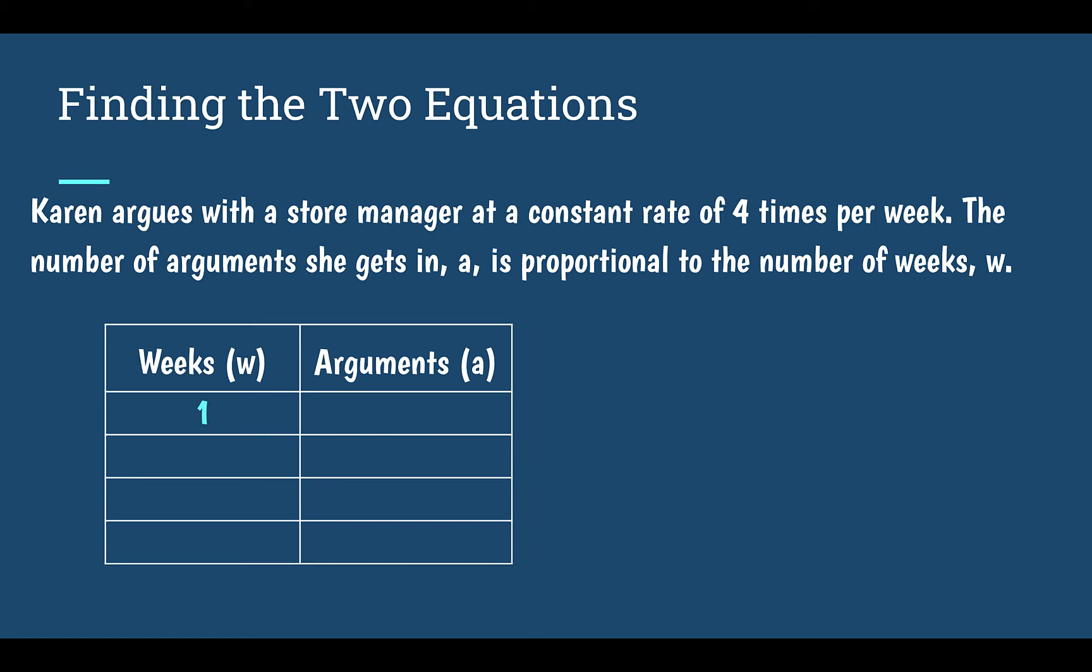We know that she gets in four arguments per week. So if one week passes, that would mean she's been in four arguments. Based on this, we need to be able to find our constant of proportionality. I would take my end, which was four, and my start, which is one, and divide. Four divided by one is four. We also could have noticed that one is our unit rate, so the number that goes with it, four, is our constant of proportionality. In our table, we are multiplying by four each time.